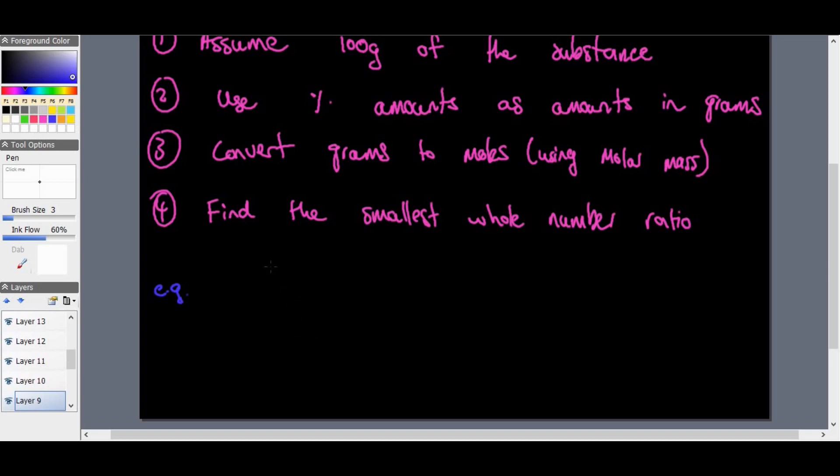Let's have, if we find the empirical formula of a compound that consists of 63% manganese and 37% oxygen. So we assume that they are per 100 grams, right? So we say, well, for manganese, which is 63%, which is 63 grams, and you've got oxygen, which is 37%, we'll make that 37 grams.